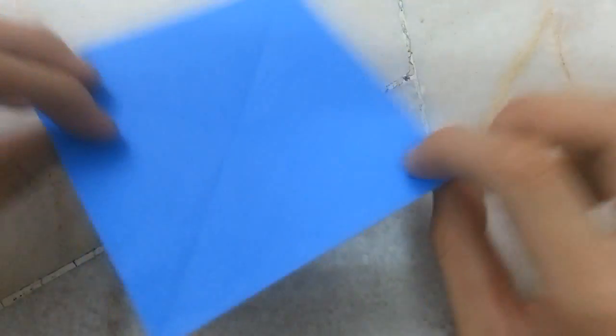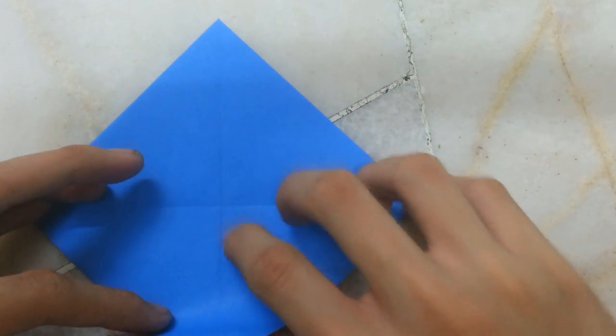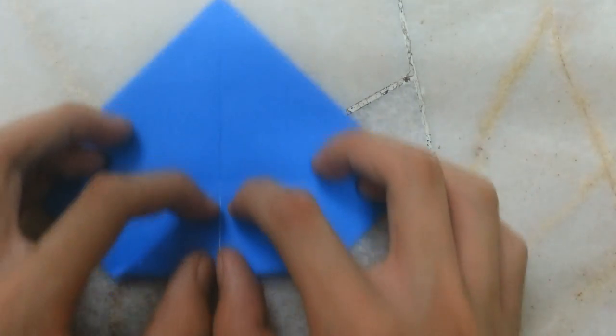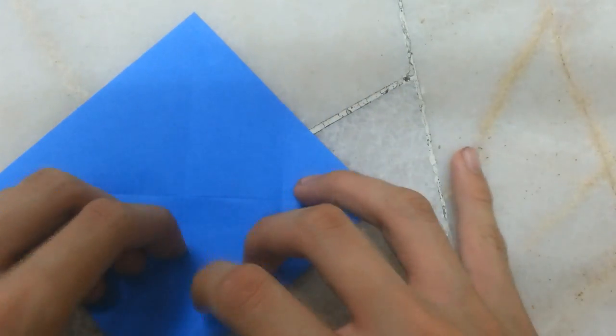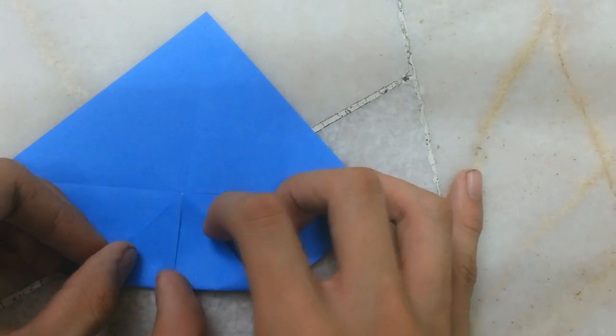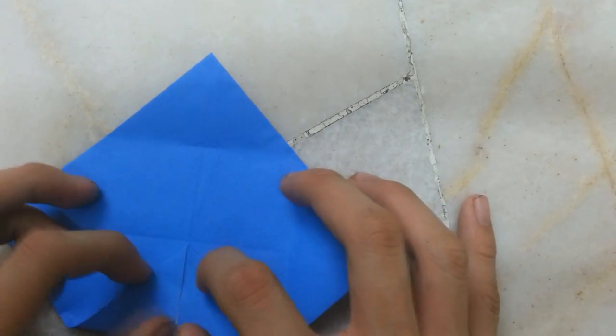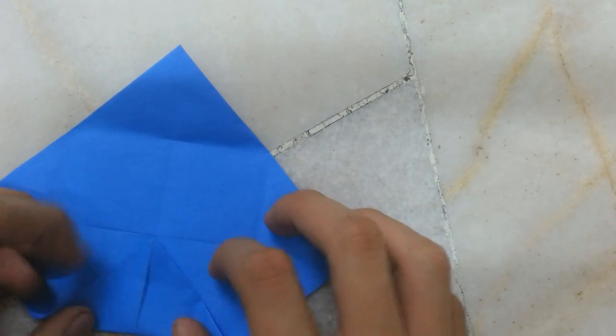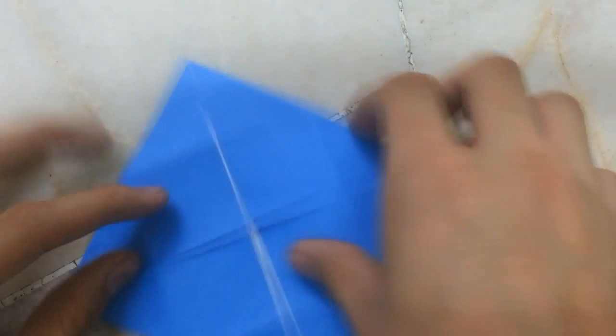Then you turn it over and then you fold the corner to the center point. Then you make a crease here, this soft crease. And do the same thing here, here, and here.